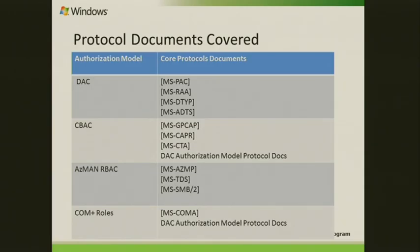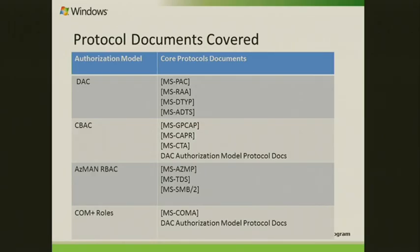These are the protocol docs covered in this document. As part of the Discretionary Access Control model, the PAC data section document — the Privileged Attribute Certificate data section document — is covered. Another document is RAA, the Remote Authorization API protocol, which is primarily a simulation of the access control data; it provides an administrative interface where you can simulate access control conditions, including even claims. There is also the DTYP document, mentioned this morning, which is a data type document that has useful information with respect to authorization — like various authorization data structures — and it also talks about access check algorithms.